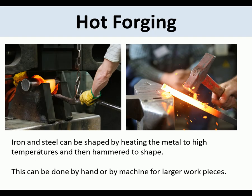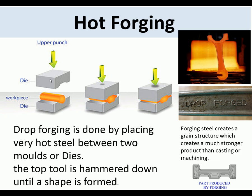Hot forging: iron and steel can be shaped by heating the metal to high temperatures and then hammering into shape. This can be done by hand — here someone is hammering hot metal — or it can be done with a machine, where a ring is being forged using a large press. So that is hot forging.